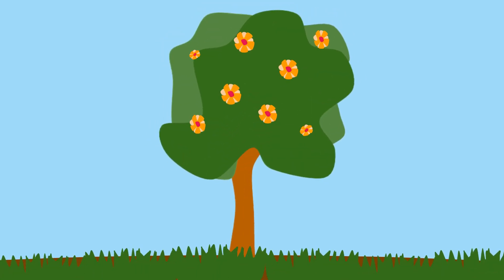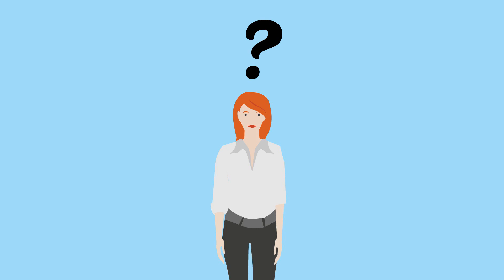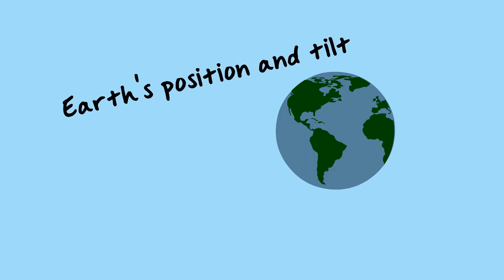Have you ever wondered why we have different seasons depending on where you go during a certain time of the year? Or how about why we have certain wind currents? All these things have a lot to do with the way the Earth is shaped and how the sun hits it at a given time.